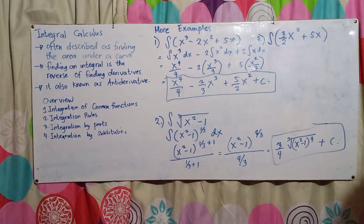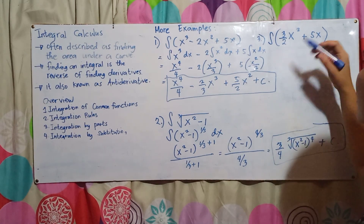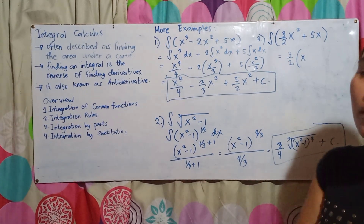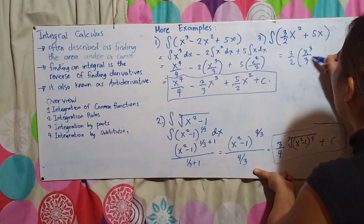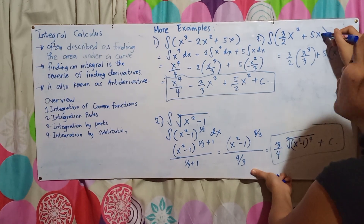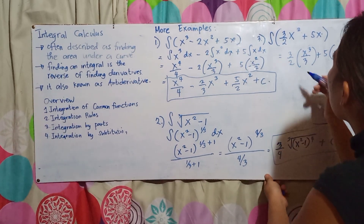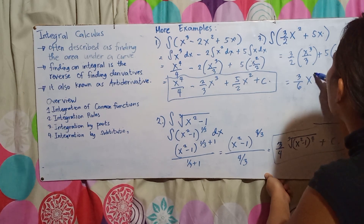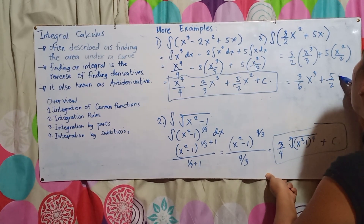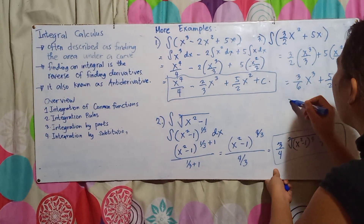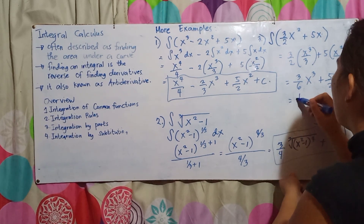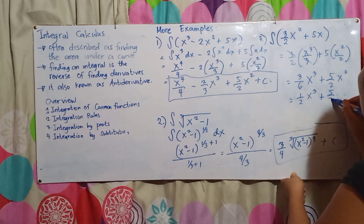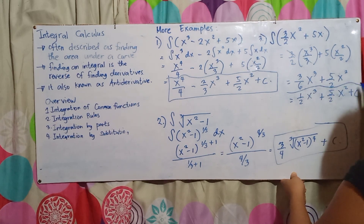Next example: direct integration. For a term with exponent 2, add 1 to get 3, giving x³/(3/2) — which simplifies using the reciprocal. For +5x, add 1 to the exponent 1 to get 2, giving 5x²/2. So the final answer is (1/2)x³ + (5/2)x² + C.